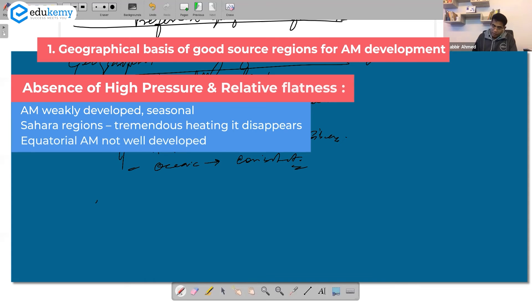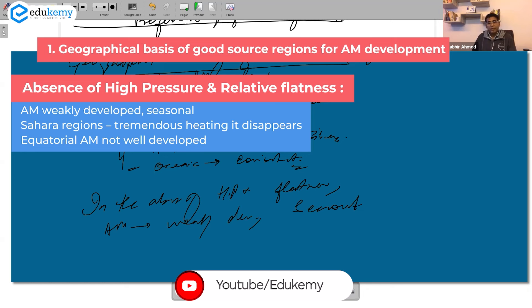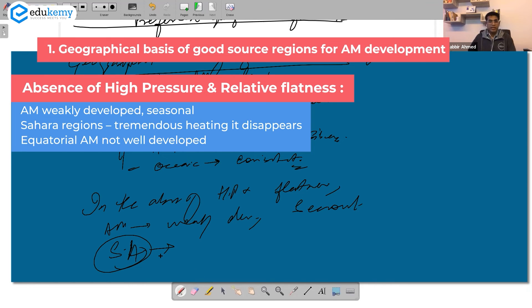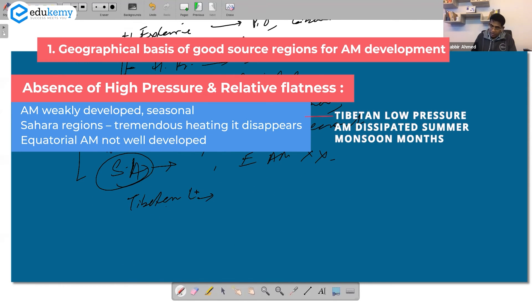In the absence of high pressure and relative flatness, air masses are weakly developed. Air masses can be seasonal. Sahara regions - when there is tremendous heating during the summers this can disappear. The equatorial air masses, these are not well developed. So give about two examples, bring a discussion here. You can discuss about the Tibetan low pressure and how the air mass gets dissipated in the summer monsoon months.